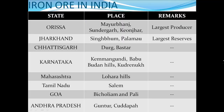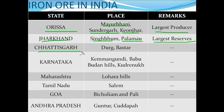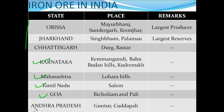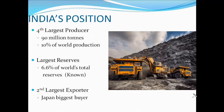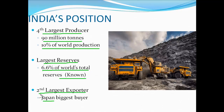Availability of iron ore in India: the largest producers are in Orissa — Mayurbhanj, Sundargarh, and Keonjhar. Jharkhand — Singhbhum and Palamu — has the largest reserves, and Chhattisgarh's Durg and Bastar districts are also major sources. These three states are the most important sources of iron ore in India, followed by Karnataka, Maharashtra, Tamil Nadu, Goa, and Andhra Pradesh. India is the fourth largest producer of iron ore in the world, producing 90 million tons per annum — 10% of world production — and holds 6.6% of world total reserves. India is the second largest exporter of iron ore, with Japan being the biggest buyer. This map of India shows the locations of iron ore mines.